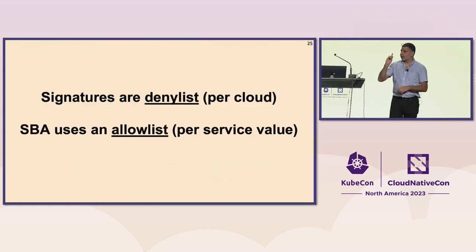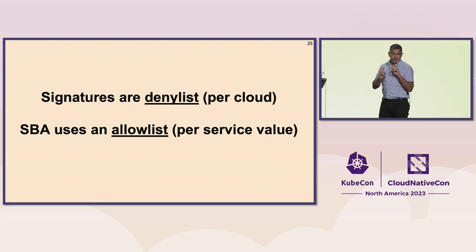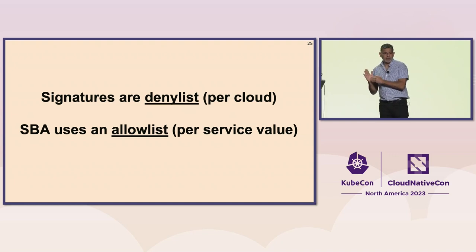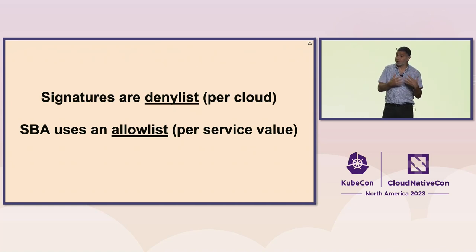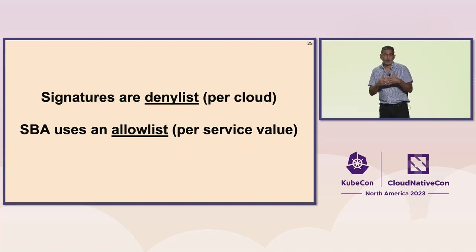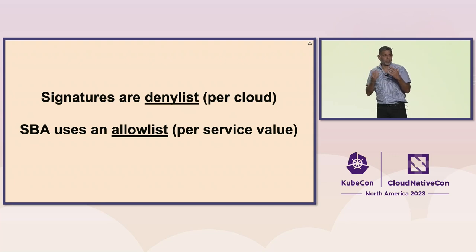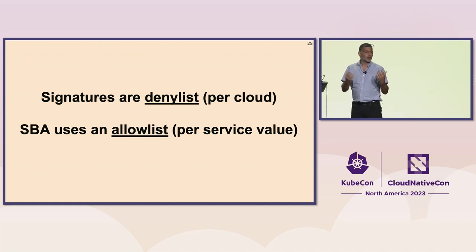Note that signatures are a deny-list — they say all of these should not be let in. Security behavior analytics is looking for an allow-list. It says: that's the okay behavior of a request; this is what a request for this service should look like. And when something is off from a security perspective, we should block it.